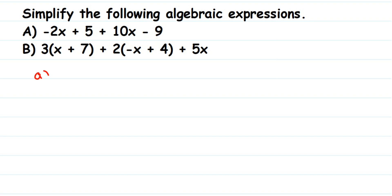So we have minus 2x plus 5 plus 10x minus 9. Whenever you're solving any expression, first check for brackets. We don't have any brackets here, so just ignore that step. The second step is to identify the like terms and unlike terms, then add or subtract the like terms.